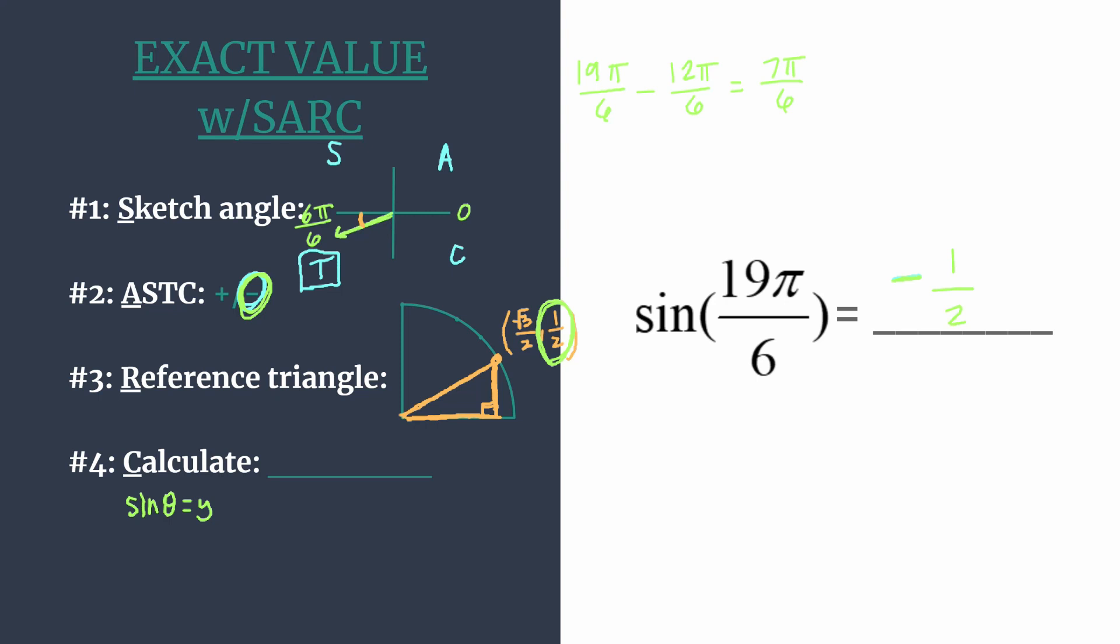So that is finding the exact value of the sine of 19π over 6 using the SARC method. I'll post a link to more worked examples in the video description, so be sure to check that out as well. Until next time.